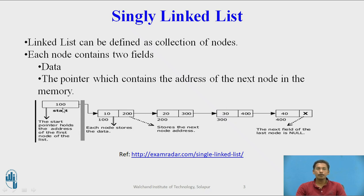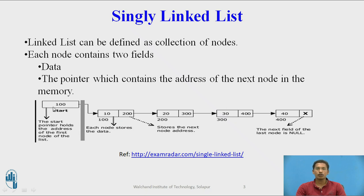Another pointer we use is called start. Start is a pointer to a structure which holds the address of the first node. So if the first node's address is 100, then 100 is stored in start. Start always points to the first node.